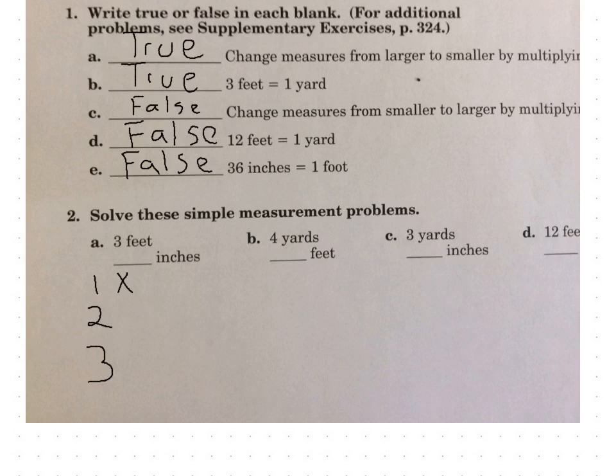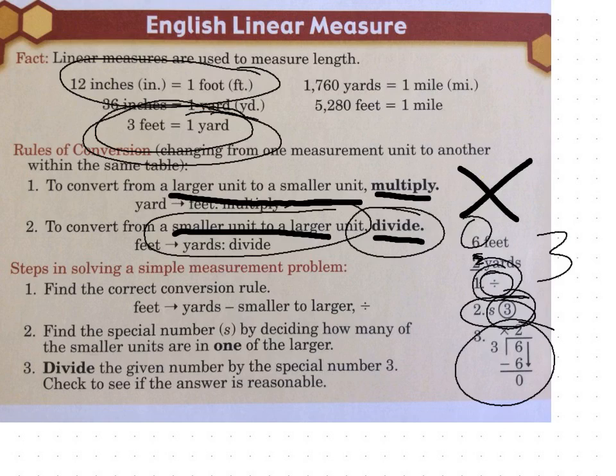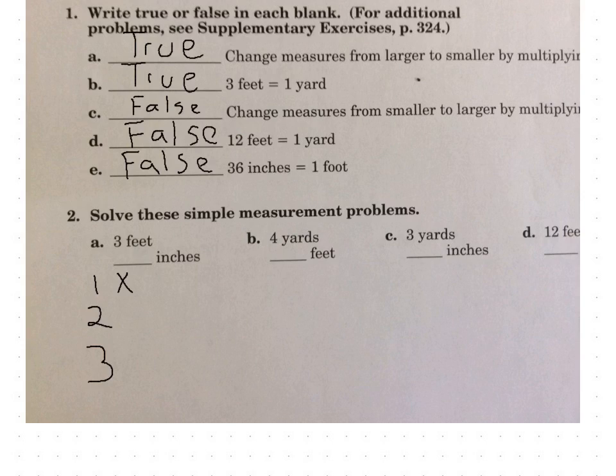Now we're going to look at the next step. What's the special number? When you think feet and inches, how many inches go into a foot? Well, 12 inches goes into one foot. So our special number is 12. And now, all we have to do is 3 times 12. 3 times 12 gives us 36. And so, 3 feet equals 36 inches.